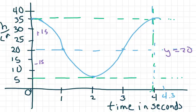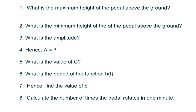Let's go and answer some of these questions. This is just a bicycle pedal going around and around, and you're measuring it in seconds. It makes a complete wave in 4 and then it starts going down again. The maximum height of the pedal above the ground is 35 centimeters. The minimum height was 5. The amplitude was 15. Hence, A equals 15.